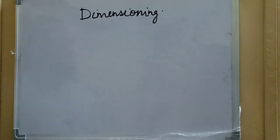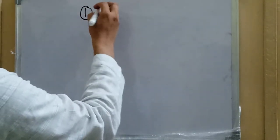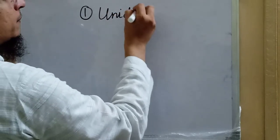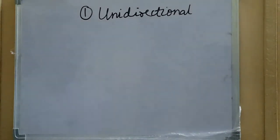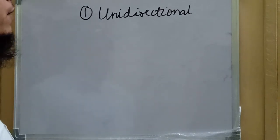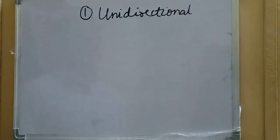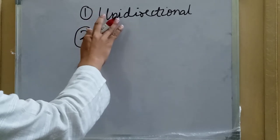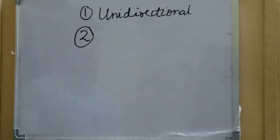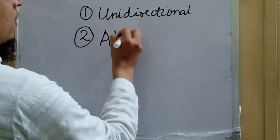We can start with the most basic: the aligned and unidirectional methods of dimensioning. In the unidirectional method, we do not change the direction of dimensions according to the direction of the drawing — we use only one direction, so it is called unidirectional.